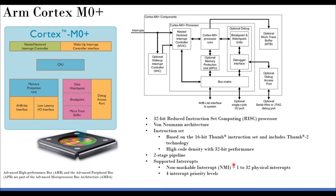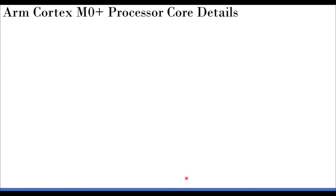There are 1 to 32 physical interrupts, and the NVIC manages their priorities. Non-maskable interrupts (NMI) are interrupts that the NVIC cannot prevent — they execute immediately without waiting for priority assignment. An example is a critical temperature event: you can't wait for the NVIC to arbitrate when the system is overheating. Accessing a non-existent or reserved memory location can also be treated as an NMI. There are four interrupt priority levels available for the 32 physical interrupts.